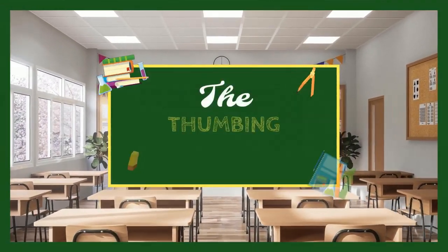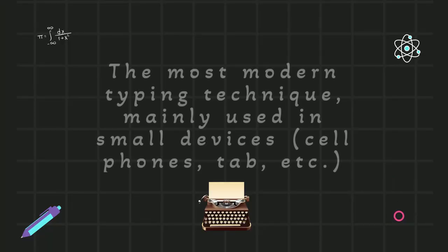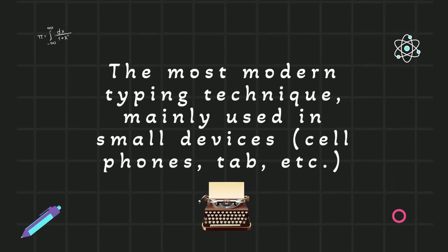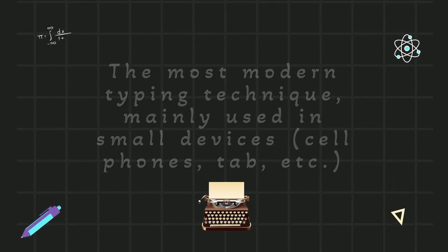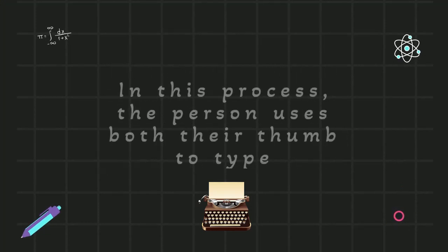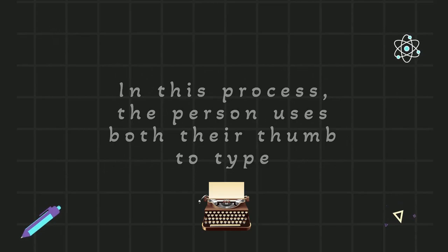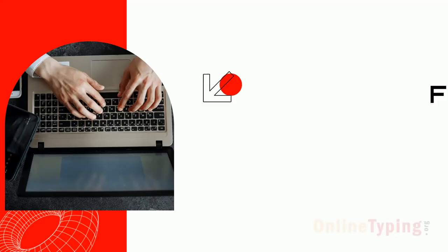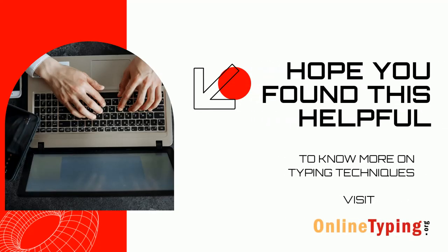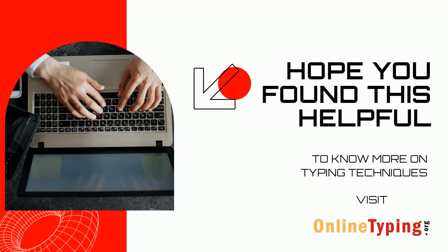The thumbing method is the most modern typing technique, mainly used on small devices like cell phones and tablets. In this method, the person uses both their thumbs to type. Hope you found this video helpful. To know more on typing techniques, please visit onlinetyping.org.